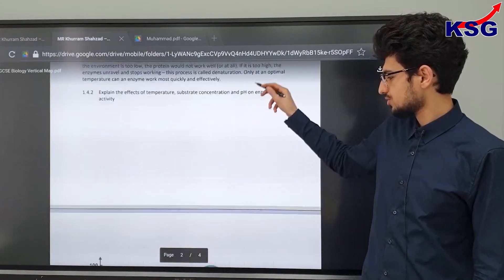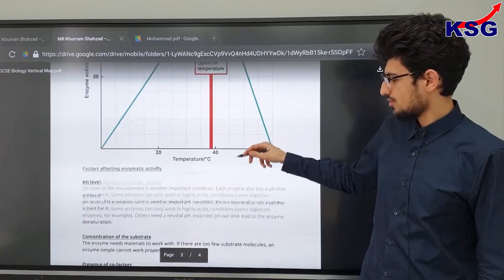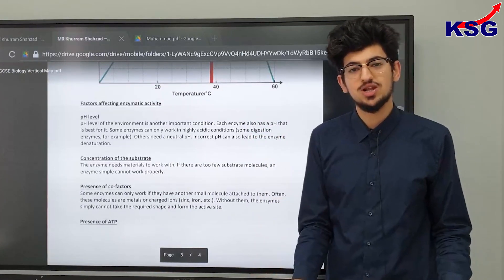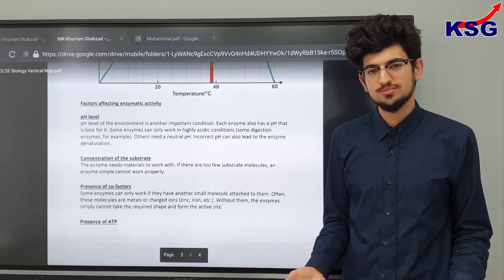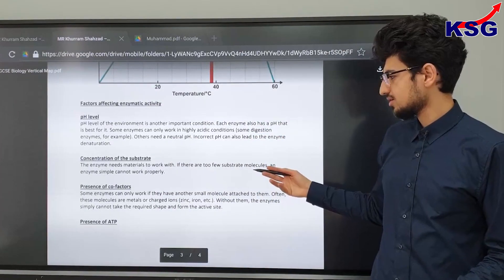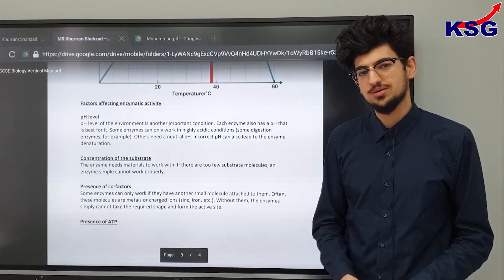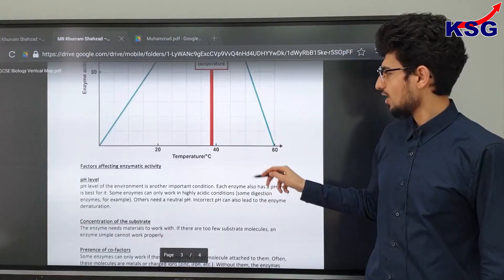This includes the pH level, the temperature, the cofactors as well as the presence of ATP. So how do they affect them? Firstly we'll talk about temperature.